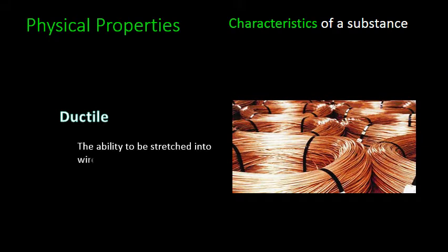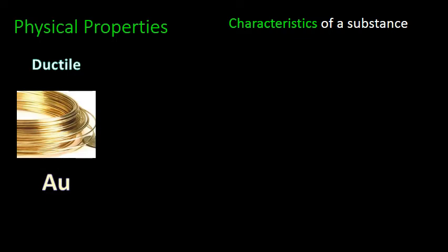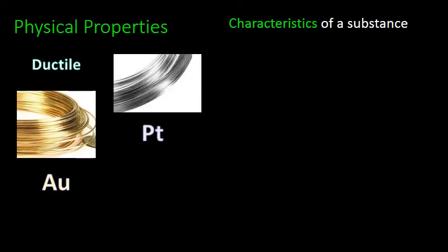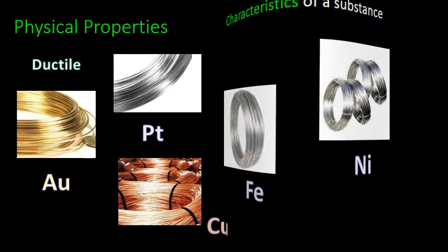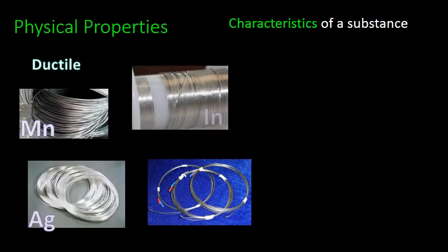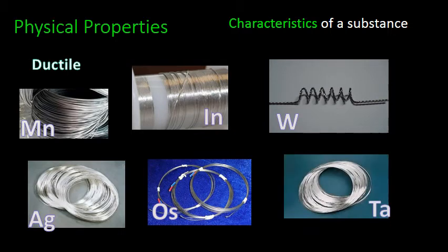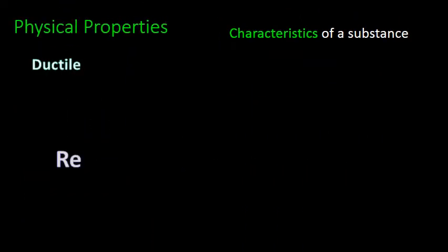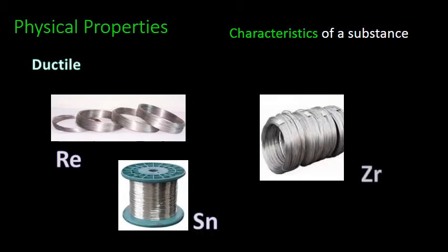Ductile describes the ability to pull a wire, make the metal, pull the metal into a wire without breaking it. This is known as the tensile strength of a wire. Some metals that you can pull into wires include gold. That's how we make gold jewelries, because we can pull them into different shapes. Platinum, those are the most ductile. Then we have copper, iron, nickel, manganese, silver, indium, osmium, tungsten, which is used in light bulbs, thallium, rhenium, tin, and zirconium.